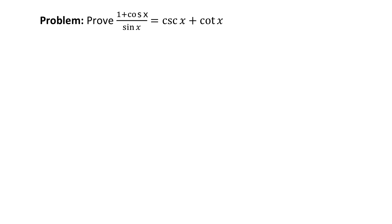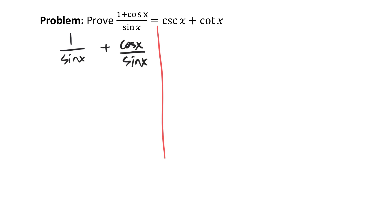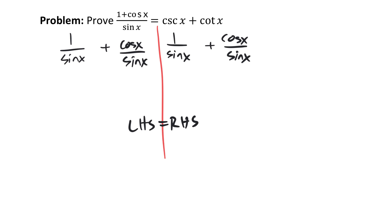Here's another: (1 plus cos x) over sine x equals cosecant x plus cotan x. Pause and give it a try. I'm going to try the fraction split: 1 over sine x plus cos x over sine x. On the right-hand side, rewriting in terms of sine and cos: cosecant is 1 over sine x, and cotan — the flip of tan — is cos over sine. And I'm done. Left-hand side equals right-hand side. Not all identities are this easy, but some are just a one-line question.